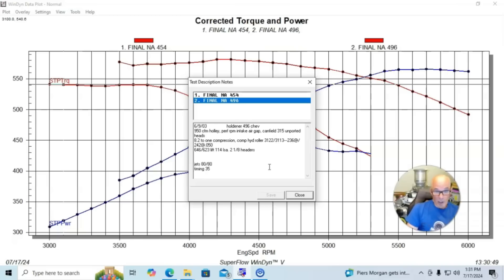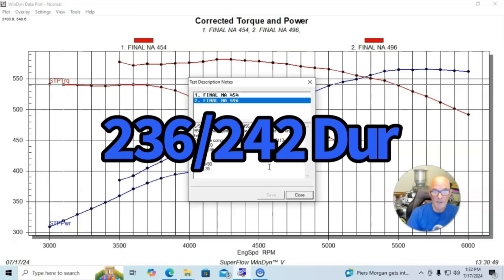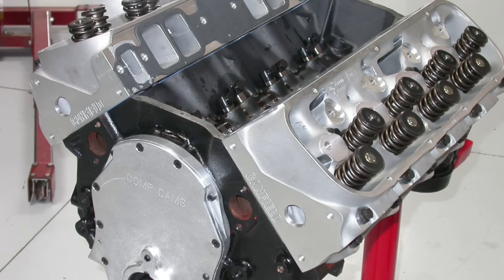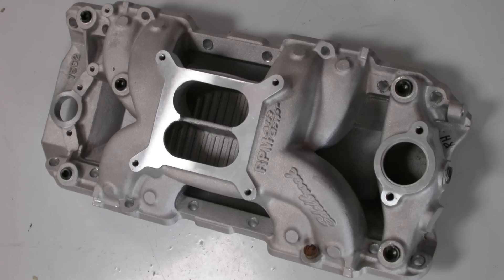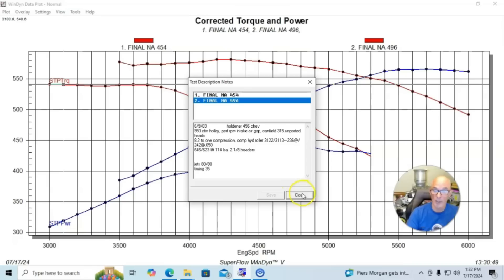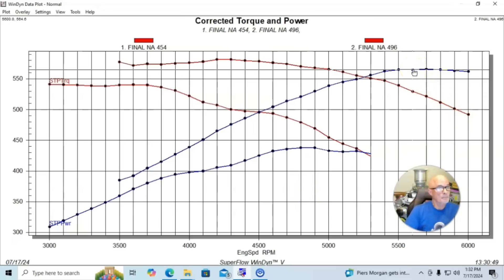The 496 was a low compression 496, equipped with a hydraulic roller camshaft, 646, 623 lift, 236, 242 at 50, and 114 degree lobe separation angle. We ran this thing with slightly larger headers connected to a set of unported AS-CAS Canfield 317 aluminum heads. We also replaced the Performer 2.0 with a Performer RPM air gap and ran a 950 HP Holley carburetor. After tuning, we got some pretty good power, 565 horsepower, 581 foot-pounds of torque.